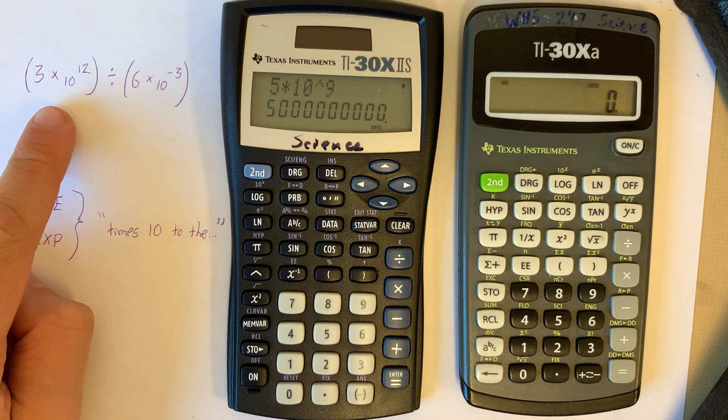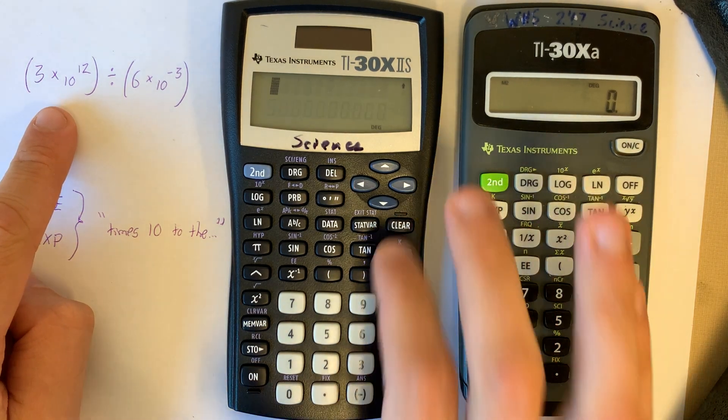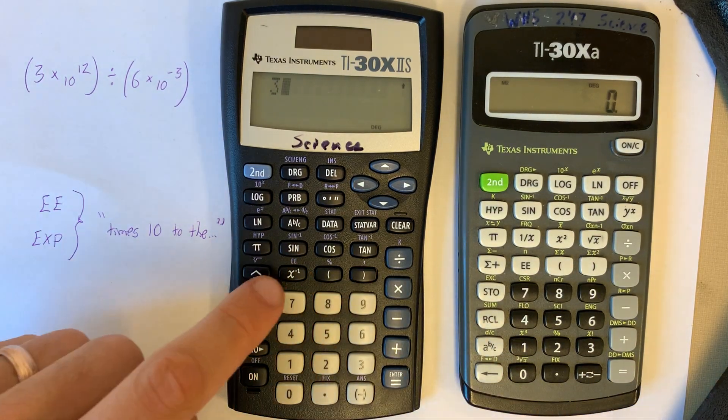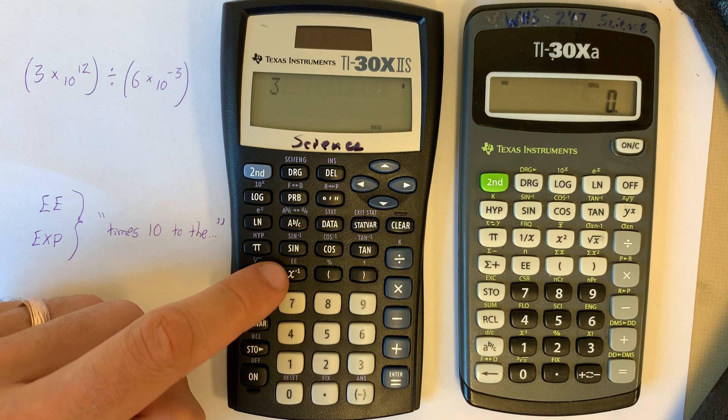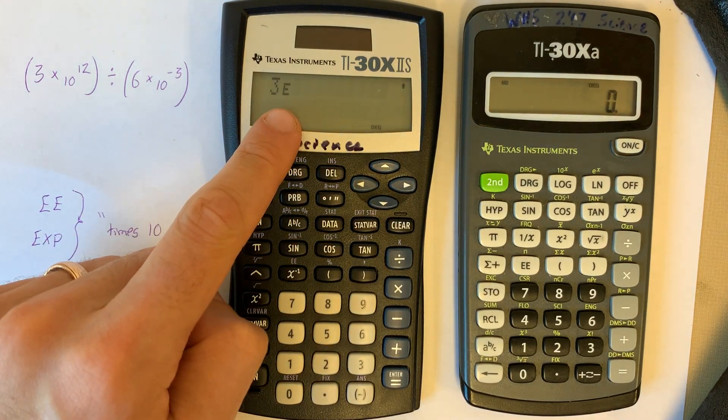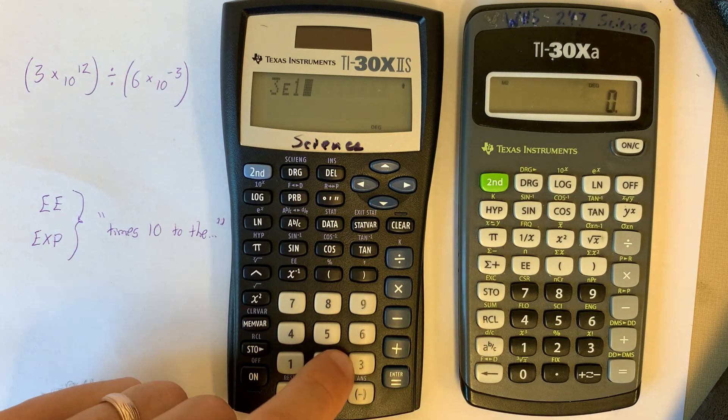So here's how we're gonna do this math problem. I'm gonna type 3, and then times 10 to the, I'm gonna press EE, which is on the second function here. So second EE, and I see an E on the calculator screen, 12.